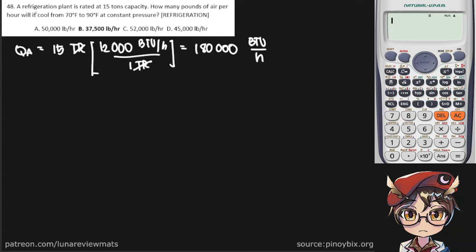How many pounds of air per hour will it cool from 70 degrees Fahrenheit to 90 degrees Fahrenheit? So our final temperature is 90 degrees Fahrenheit, and our initial temperature is 70 degrees Fahrenheit. The process is a constant pressure isobaric process, and we're asked to find the mass of air per hour.